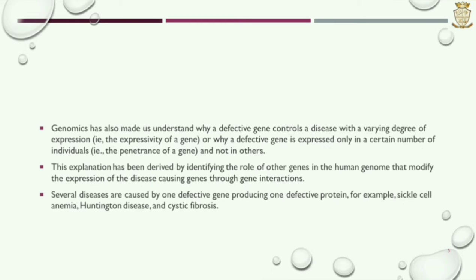Genomics has also helped us understand why a defective gene controls a disease with a varying degree of expression, or why a defective gene is expressed only in certain individuals and not in others. This explanation has been derived by identifying the role of other genes in the human genome that modify the expression of disease-causing genes through gene interactions.